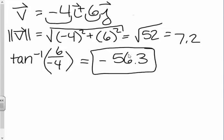Now, the problem with this value is that sometimes calculators can lie to us. Negative 56.3 degrees is in the fourth quadrant. But if you'll notice, negative 4 comma positive 6, that's actually in the second quadrant. So this did not give us the correct value.